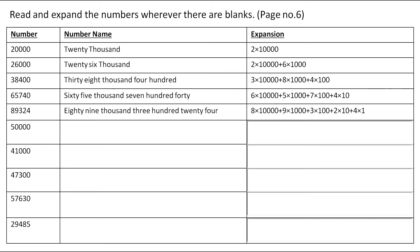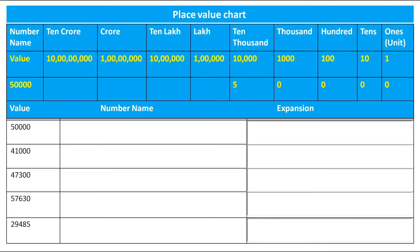Now let's start solving the remaining examples. The first example is 50,000. To make it easier, I'll put this number in the place value chart. 5 is in the 10,000 place, and then 0 on 1,000, 0 on 100, 0 on 10, and 0 on the unit place. So the number name is fifty thousand, and the expansion is 5 × 10,000.